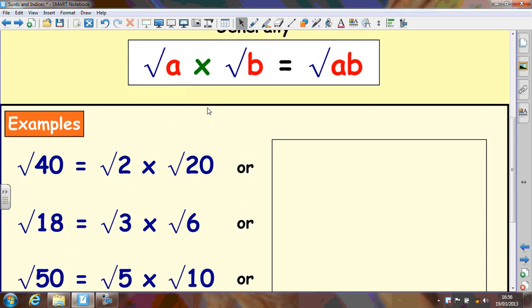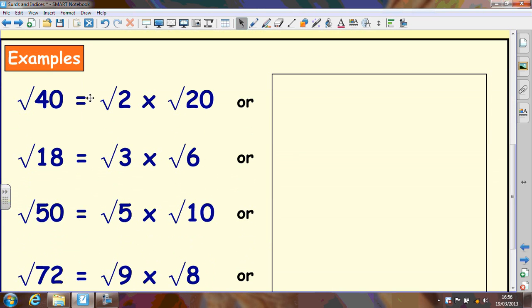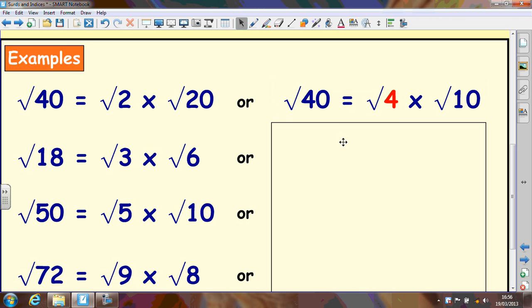Now when you're simplifying a surd down, generally we want to break it up into two different parts, one of which is a square number. Now root 40 can be written as root 2 times root 20. But a better way to simplify it, and we'll look at this later in more detail, is to write root 4 times root 10 because square root 4 you can simplify down to 2.